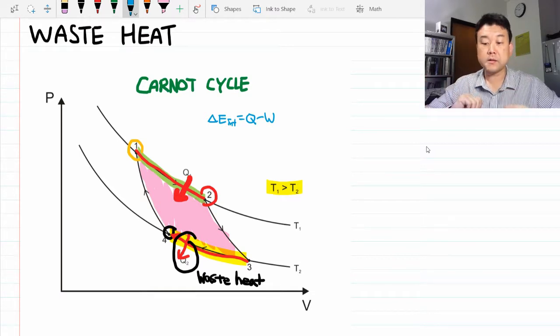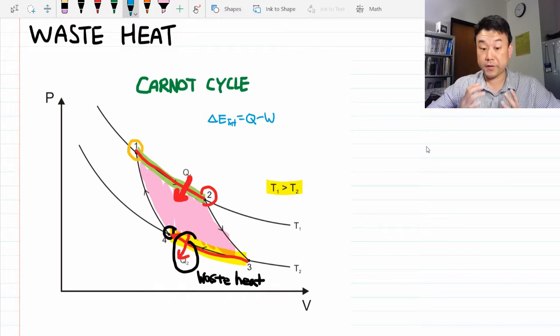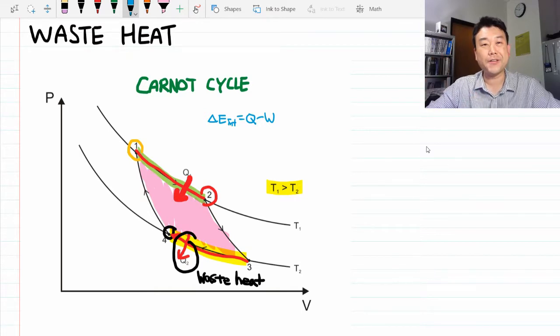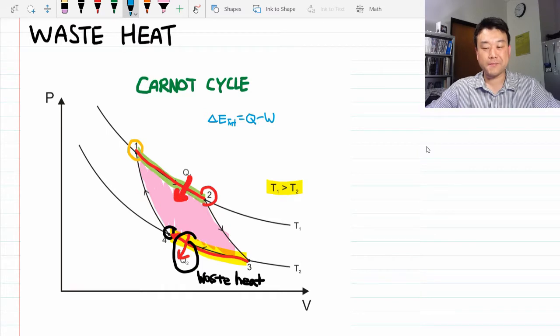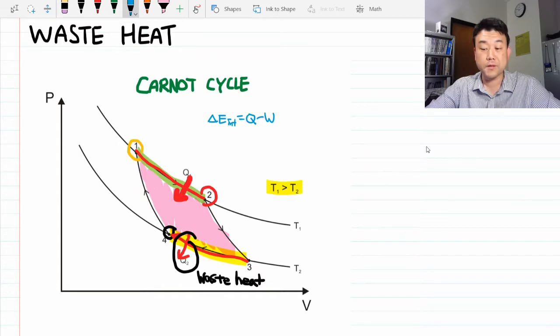This Carnot cycle does represent our best effort at doing this. It's idealized to the point no real-world process can ever be. But you still can't avoid turning a fraction of your input heat into output heat, the waste heat. It's at this point where we say, as physicists, there must be a law that prevents this desirable good thing from happening.